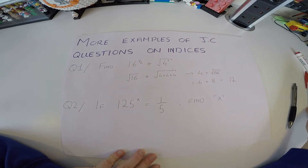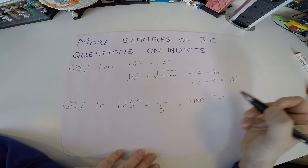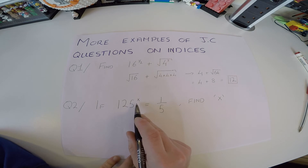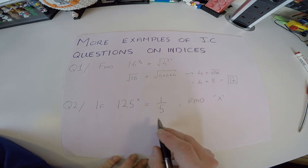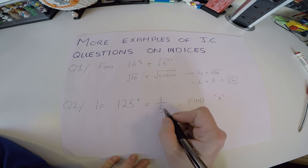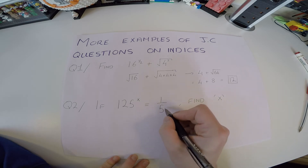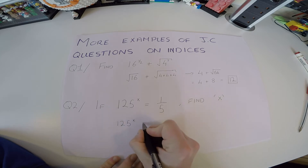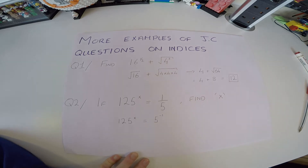Question 2: 125 to the power of x equals 1 over 5, find x. First, we're going to bring the 5 up. When we bring a base up above the line it changes sign, so we keep the 125 over here and the 5 becomes 5 to the power of minus 1.